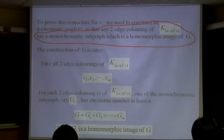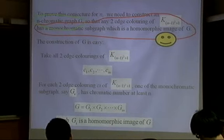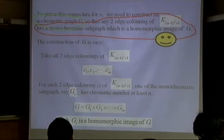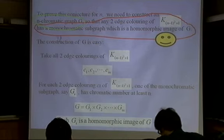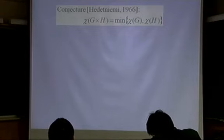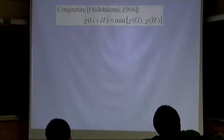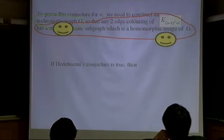I take the direct product (also called categorical or tensor product) of all these G_i graphs. That is my graph G. For this product, the projection is a homomorphism, so each G_i is a homomorphic image of G. Therefore, for any 2-edge-coloring of K_{(N-1)²+1}, there is a monochromatic G_i, which is a homomorphic image of G — that part is proved. What remains is to show G is N-chromatic. Each factor G_i is at least N-chromatic, but I need to verify the product is also N-chromatic.